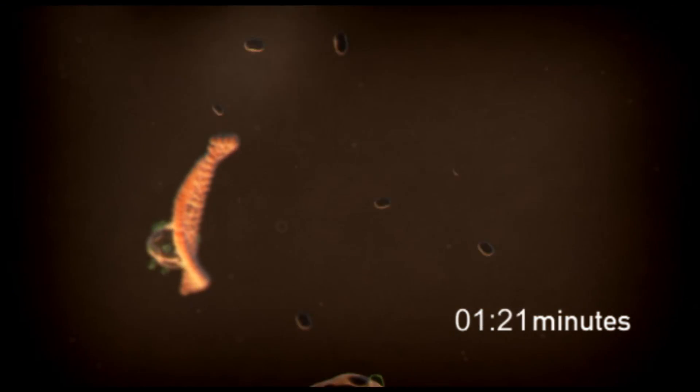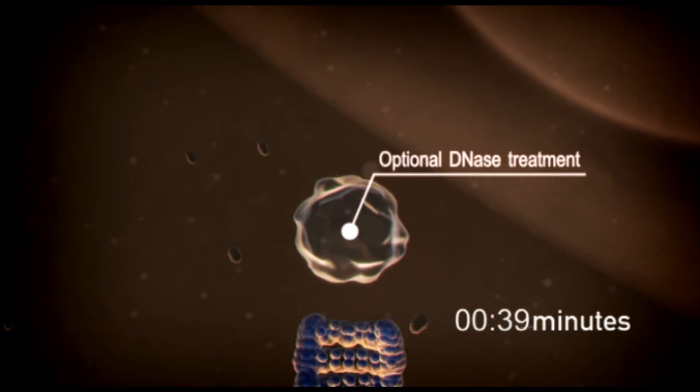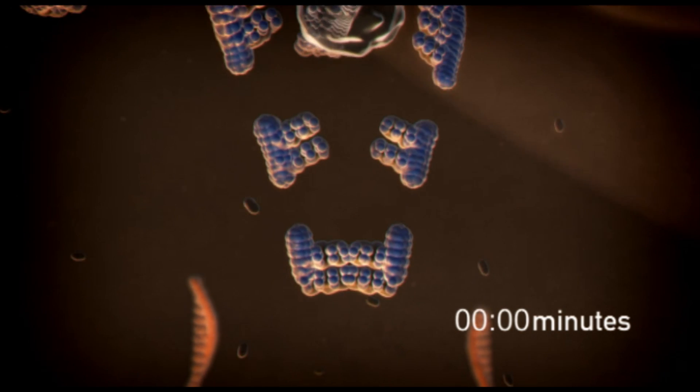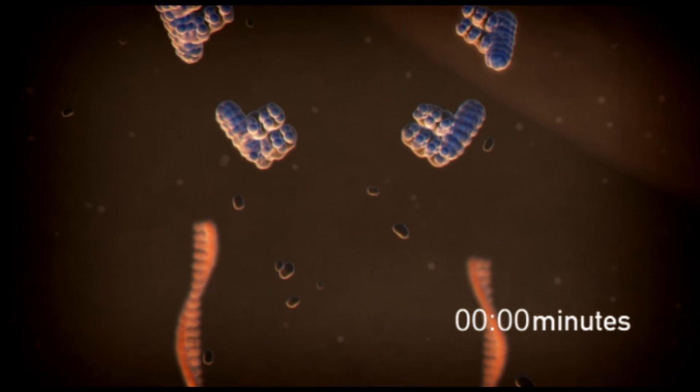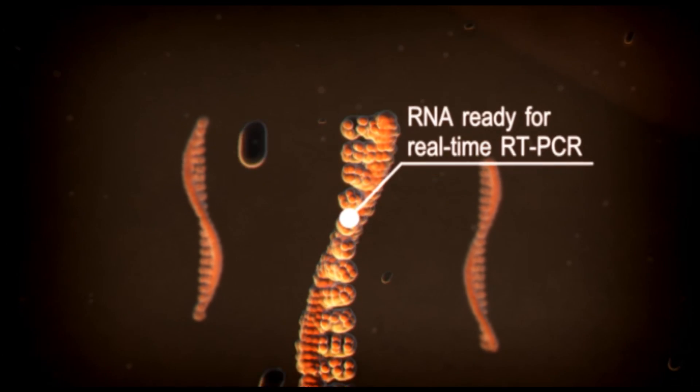If DNase is added to the lysis solution, genomic DNA is also degraded at this step. Five minutes later, a stop solution is mixed into the lysate to inactivate the lysis reagents, leaving you with a sample ready for real-time PCR.